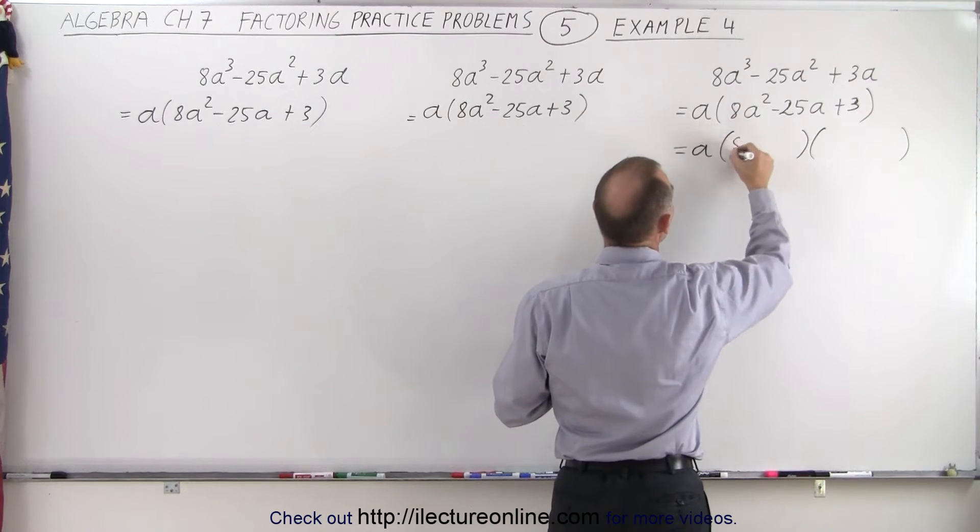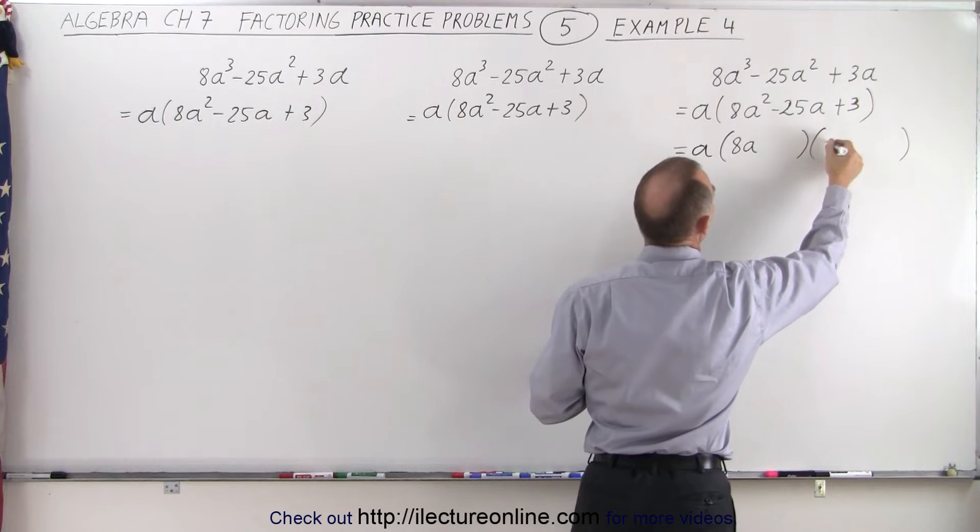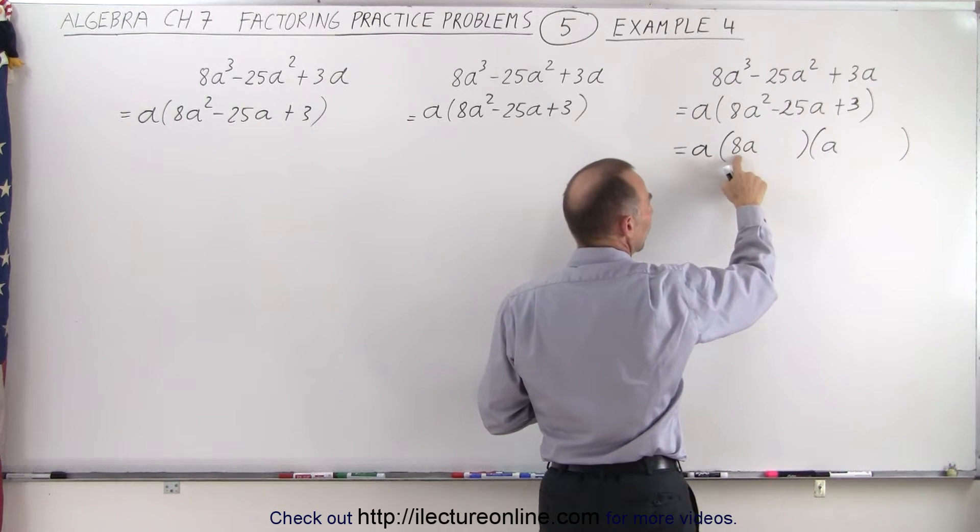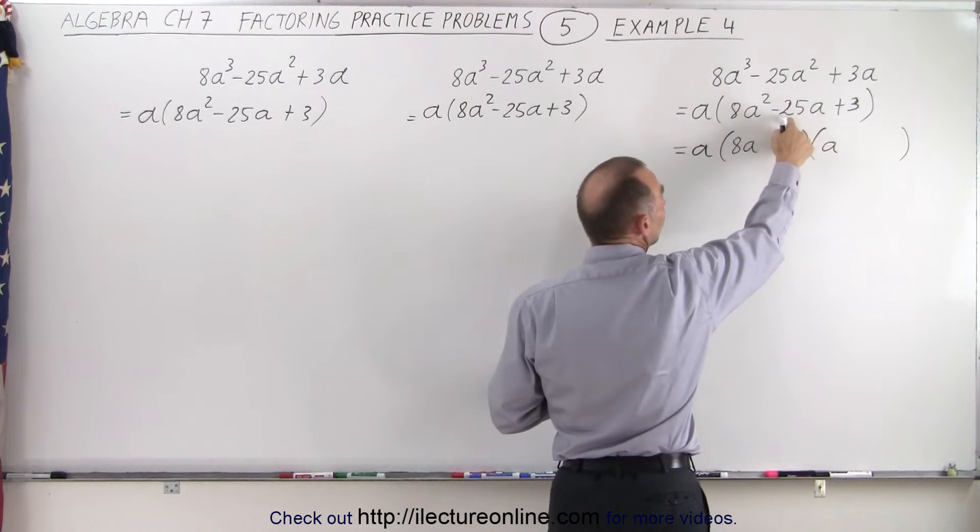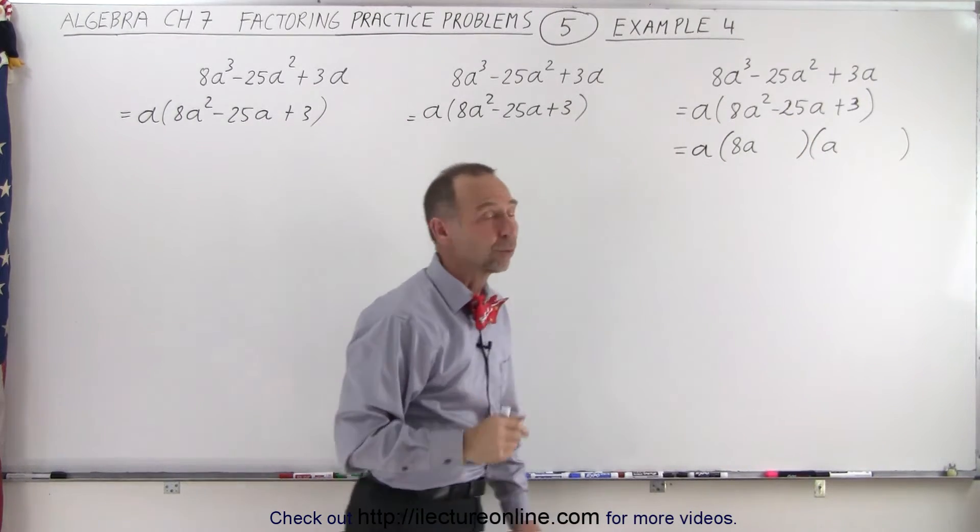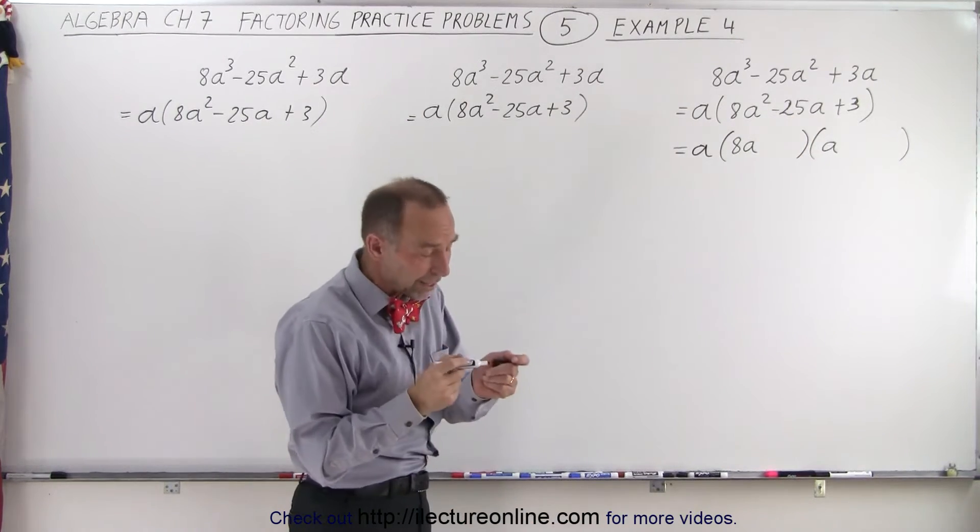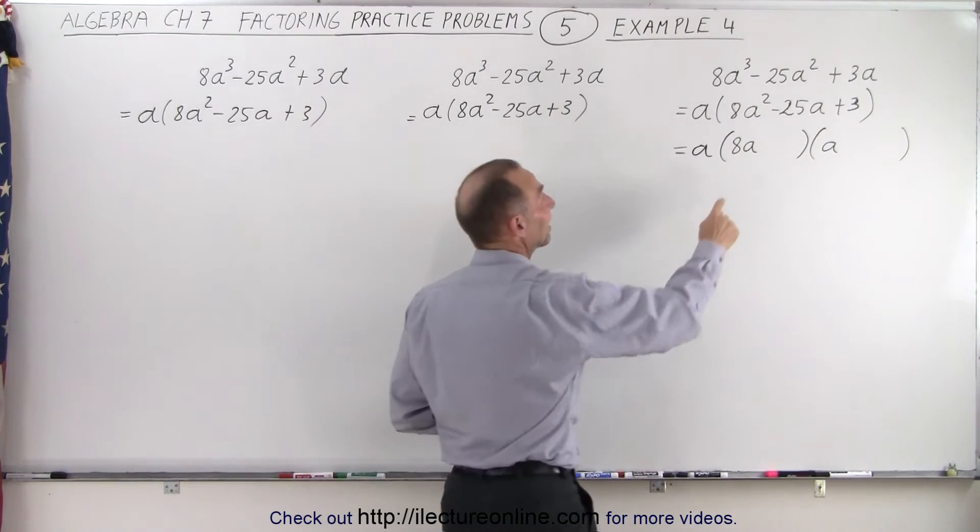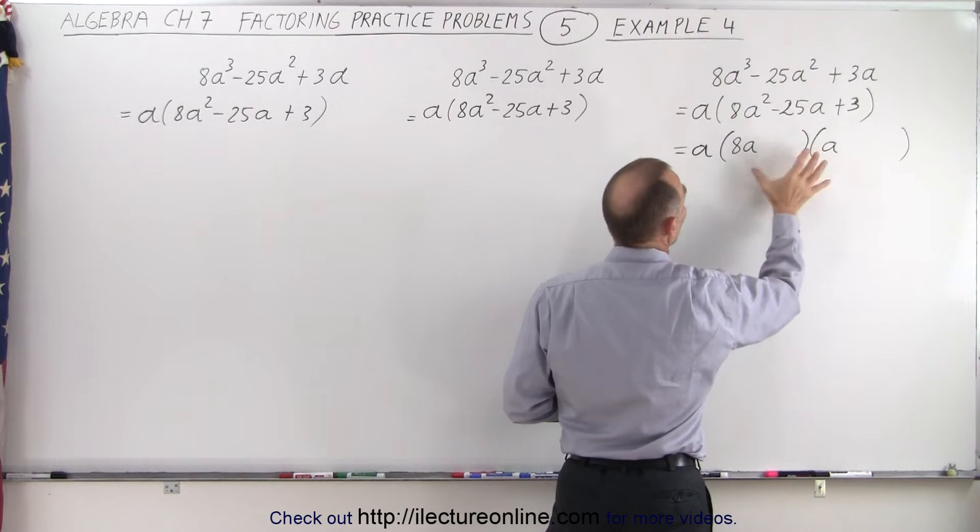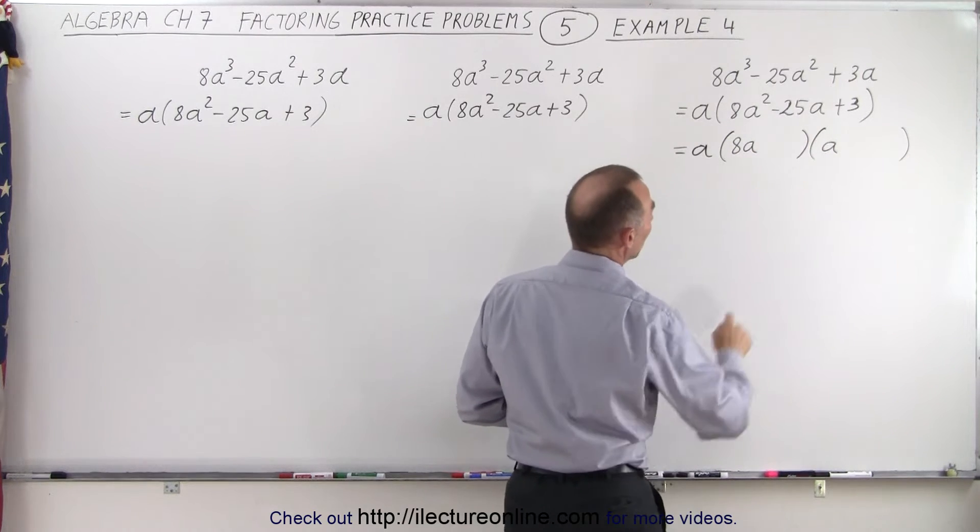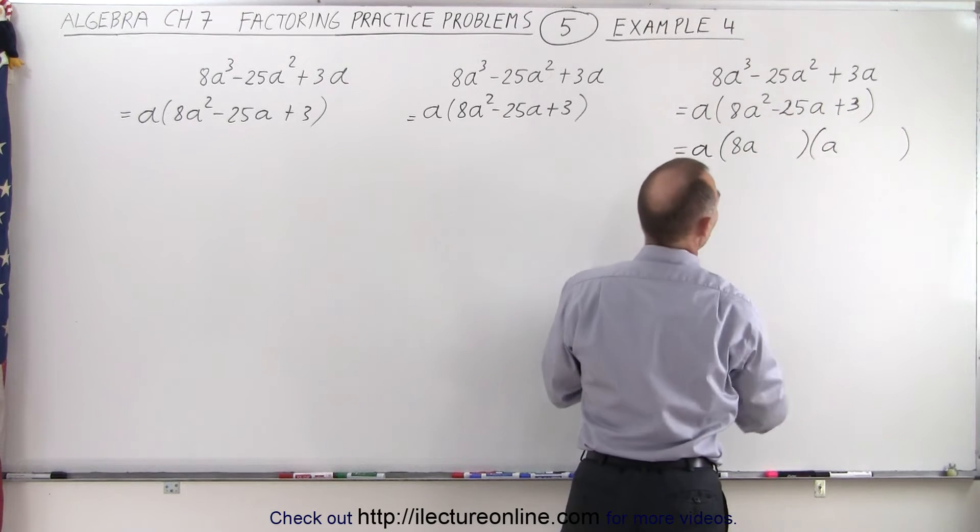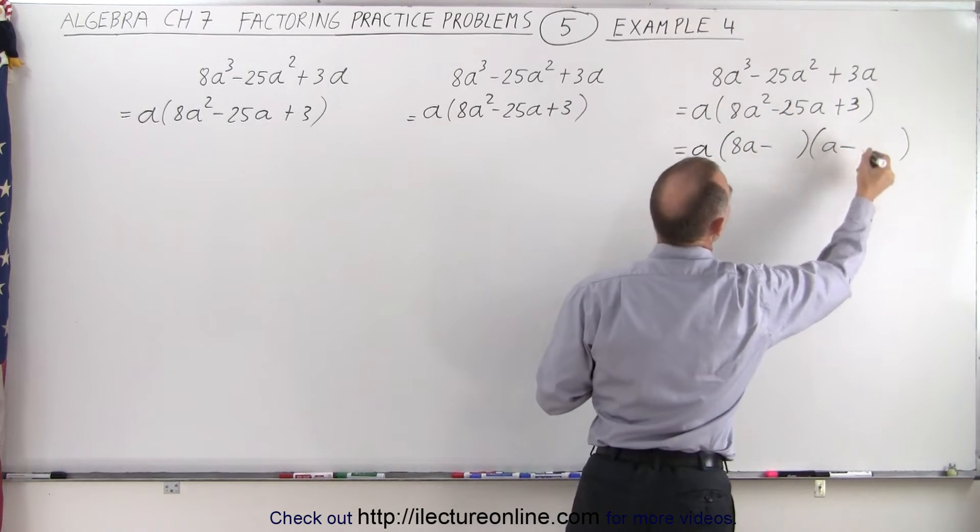Again, you need one of these coefficients, the numerical coefficients, to be really big in order to get something as big as minus 25 as a middle term. So sometimes, by looking at the numbers and kind of guessing, you realize you most likely get the correct factors by starting out like this. Now notice that here we have a negative sign and there we have a positive sign. That means both of these must be negative.